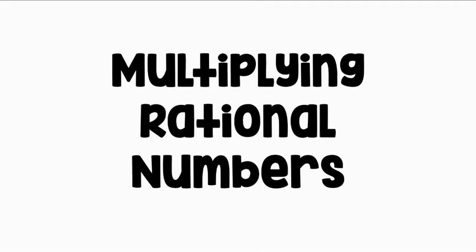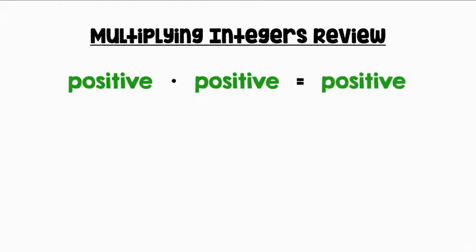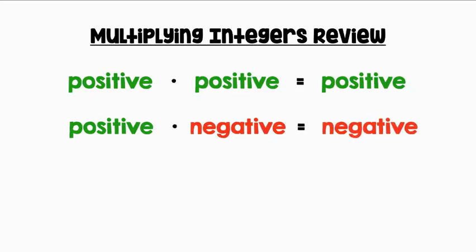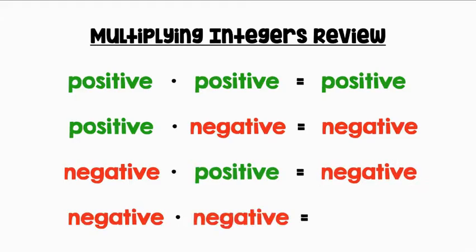Multiplying Rational Numbers. Let's review our rules for multiplying integers. A positive times a positive equals a positive. A positive times a negative equals a negative. A negative times a positive equals a negative. And a negative times a negative equals a positive. We are going to use these same rules when multiplying all rational numbers.